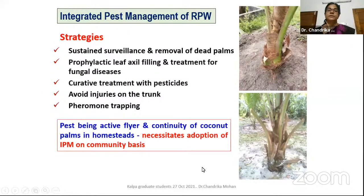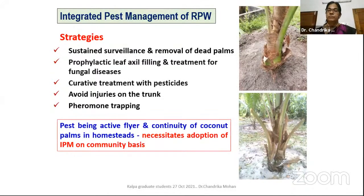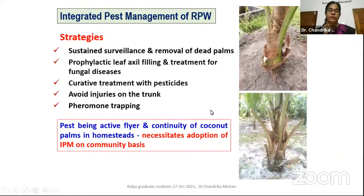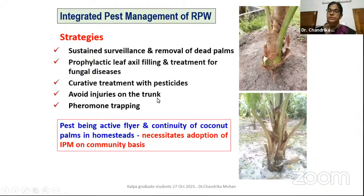What are the strategies for integrated pest management? First, sustained surveillance and removal of dead palm. If one palm is infected and the crown has toppled, there is no recovery — that palm has to be cut and removed from the site. Otherwise it will harbor three or four more generations in that palm itself, and the pest will spread to nearby young palms. Prophylactic leaf axil treatment for fungal diseases like leaf rot and bud rot must be done immediately, followed by curative treatment with pesticides. Also avoid injuries on the trunk.